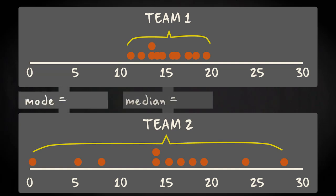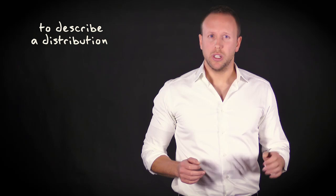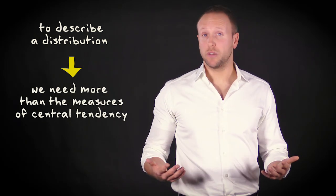However, mode, median and mean are the same. In both distributions the mode equals 14.1, and median and mean equal 15. This indicates that in order to adequately describe a distribution, we need more information than the measures of central tendency.